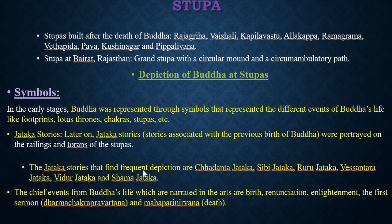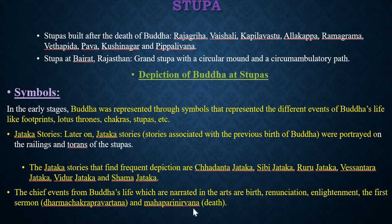The Jataka stories that find frequent depiction are: Chandanta Jataka, Sibhi Jataka, Ruru Jataka, Vaisantra Jataka, Vidhur Jataka, and Shama Jataka. The chief events from Buddha's life narrated in the art are: birth, renunciation, enlightenment, the first sermon (Dharmachakra Pravartana), and Mahaparinirvana (death). These things are depicted in every Stupa. The finest surviving Stupa is the Great Sanchi Stupa.